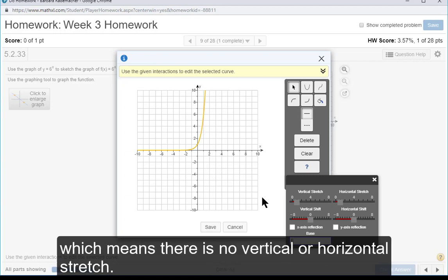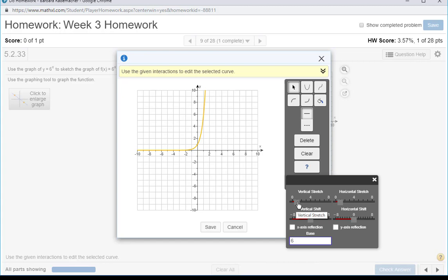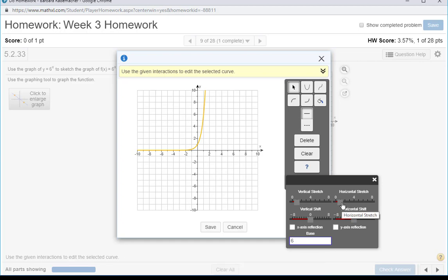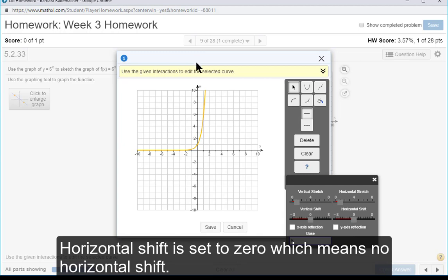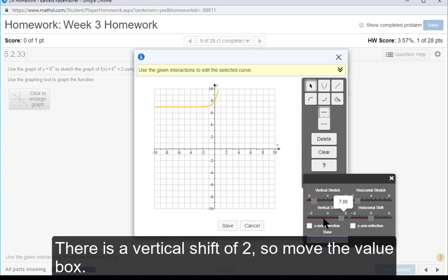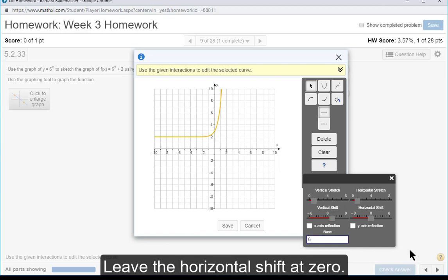The vertical and horizontal stretches are set to 1, which means there is no vertical or horizontal stretch. The vertical shift is set to 0, which means no vertical shift, and the horizontal shift is set to 0, which means no horizontal shift. But there is a vertical shift of 2, so move the gray box to 2, positive 2. Leave the horizontal shift at 0.